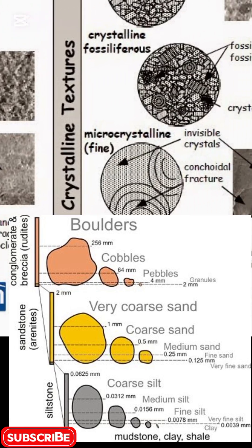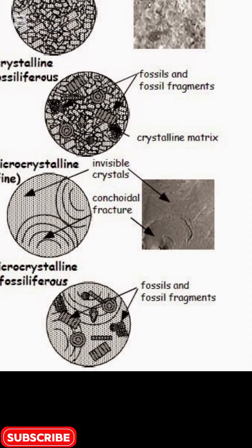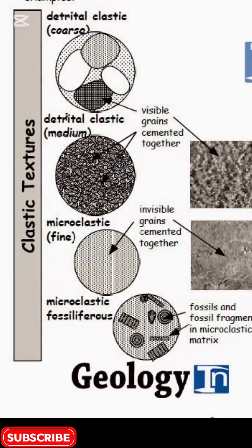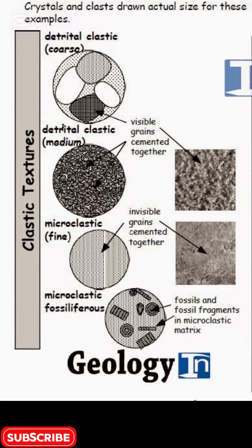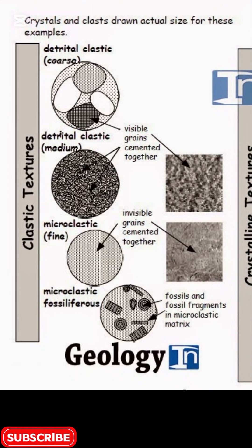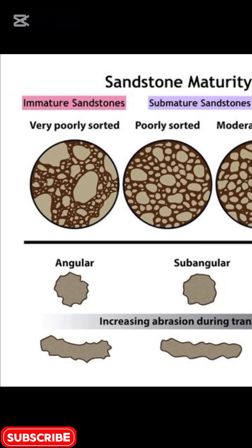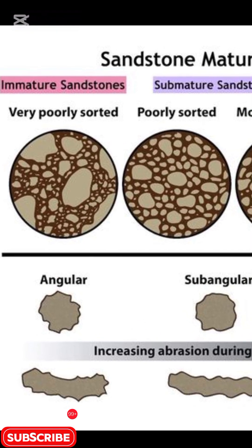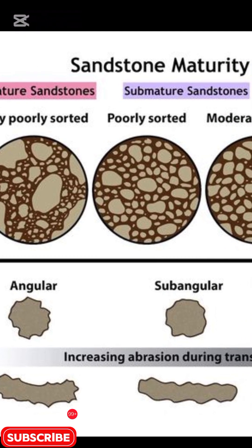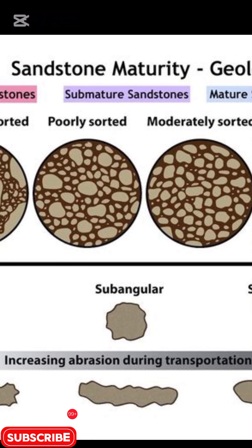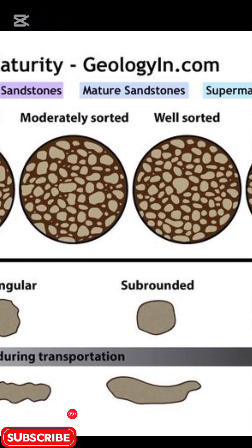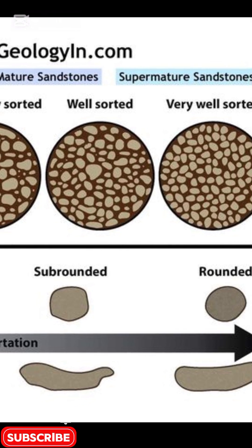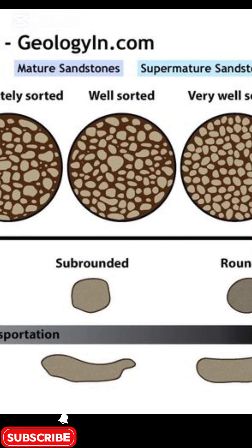When grains are invisible, the rock is microcrystalline, such as chert, or microclastic, such as shale and mudstone — grain size less than 0.062 mm. Grain sorting is another important texture characteristic. Sorting indicates the energy of the depositional environment: very poorly sorted means mixed grain sizes from glacial or talus deposits; poorly to moderately sorted indicates rivers and alluvial fans; well to very well sorted indicates beaches, deserts, and high-energy environments.